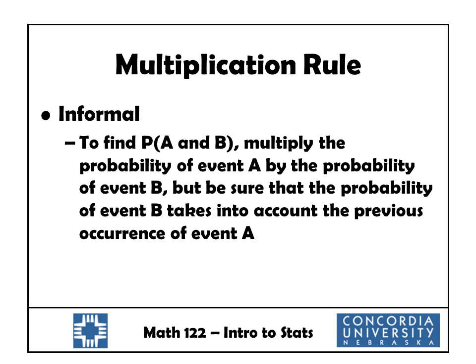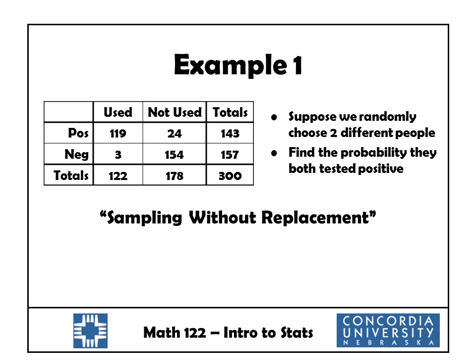So we're going to multiply, but we have to be very careful about just exactly what numbers we multiply. To illustrate this, let's look at this same table of data that we saw in the last section. Remember, this dealt with a marijuana drug test. This drug test was given to 300 people. They tested either positive or negative, and at the same time they were asked have you used or not used marijuana.